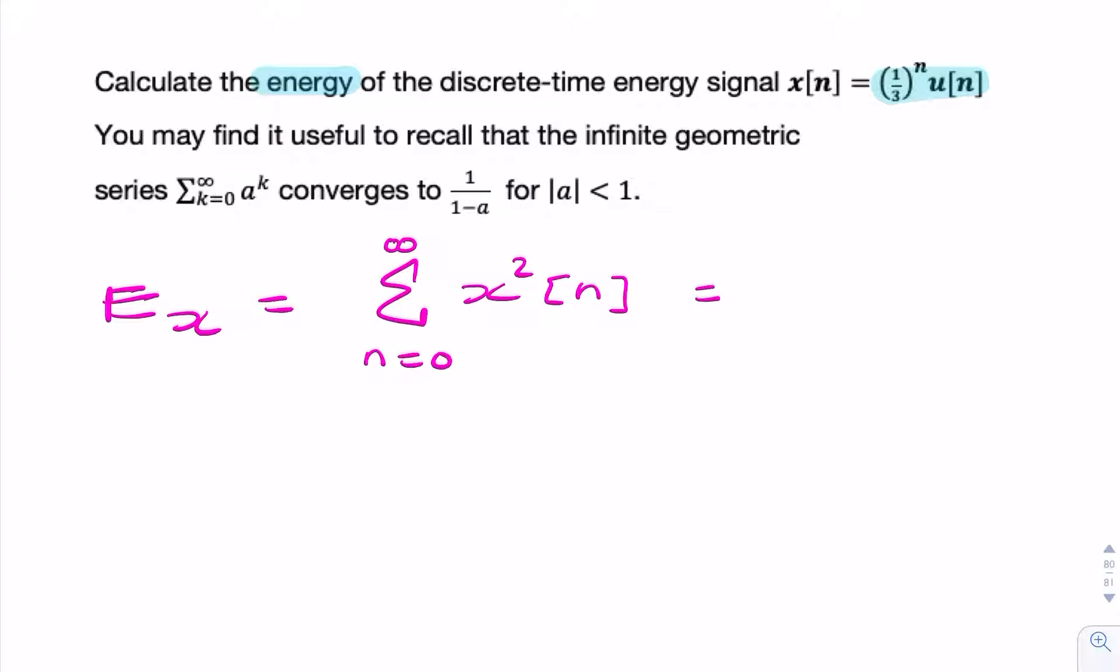We simply replace x[n] with the expression we're given: 1 over 3 to the power of n, times u[n], all squared. These powers multiply, so we end up with 1 over 3 to the power of 2n, times u[n] squared.